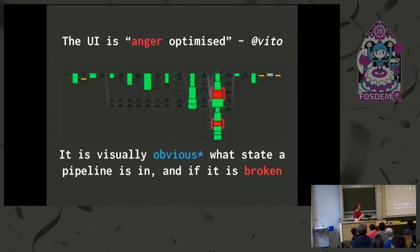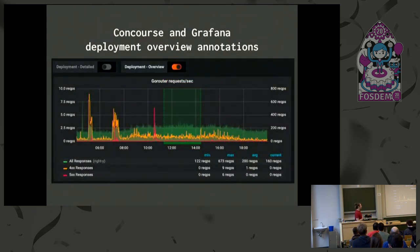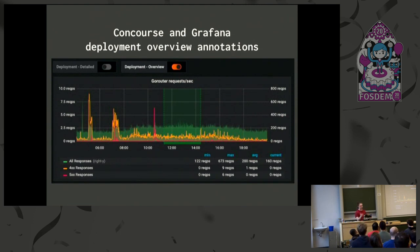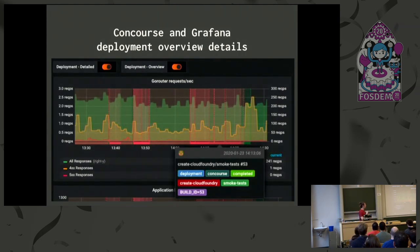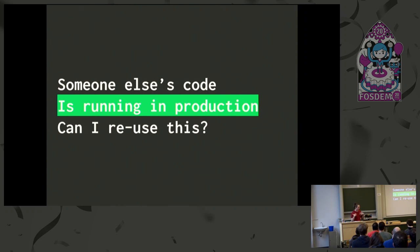The UI is anger-optimized — Concourse generates it for you, it's visually obvious what's red and why. You click through to get all the contextual logs. We also integrate with Grafana: when we start and end our pipeline we put an overlay over our Grafana dashboards so we can see our HTTP 500 rate during deployment. We instrument each individual pipeline job so if we see an elevated 500 rate for a small part of the pipeline, we can see exactly when we were rotating a certificate or redeploying something.